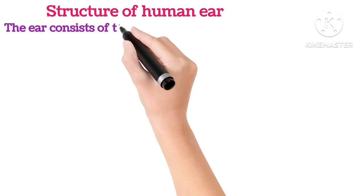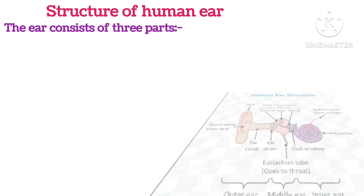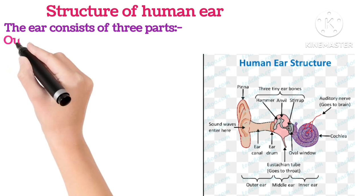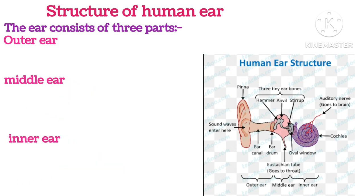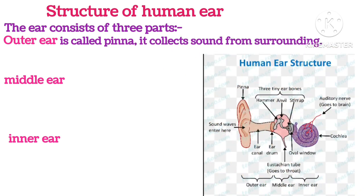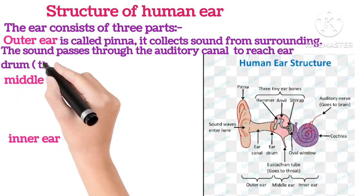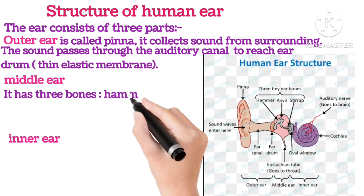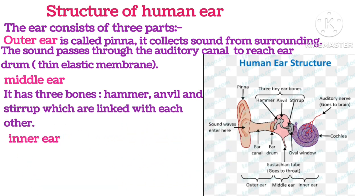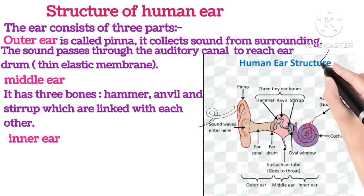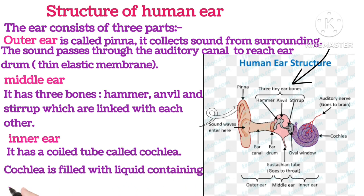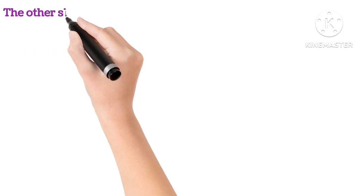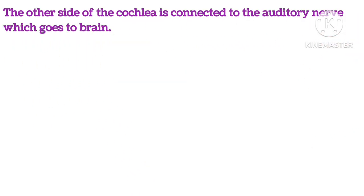Structure of the human ear: The ear consists of three parts — outer ear, middle ear and inner ear. The outer ear is also called the pinna and it collects sound from the surroundings. Sound passes through the auditory canal to reach the eardrum, which is a thin elastic membrane. The middle ear has three bones — hammer, anvil and stirrup — which are linked to each other. The inner ear has a coiled tube called the cochlea, which is filled with liquid containing nerve cells. The other side of the cochlea is connected to the auditory nerve, which goes to the brain.